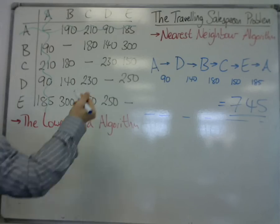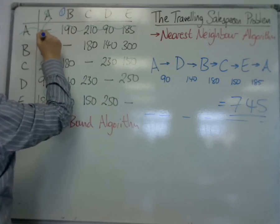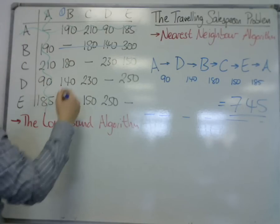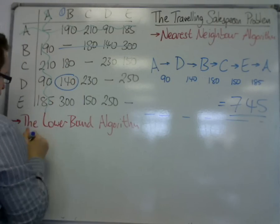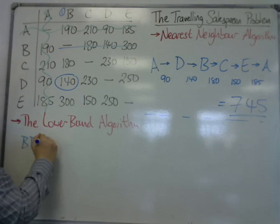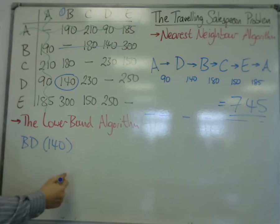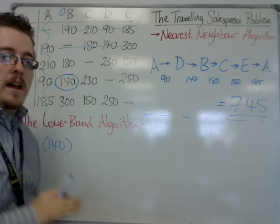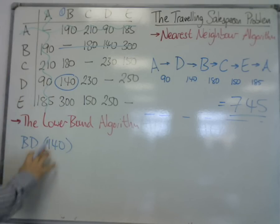So starting at B, delete row B, that will select BD first. So BD for 140. Notice how I don't just do it in the matrix, I write down exactly what I'm getting here as well. If you don't do this, you will lose marks.